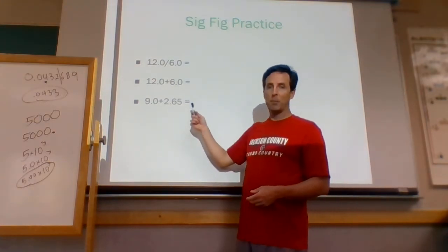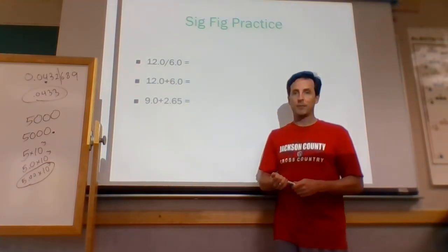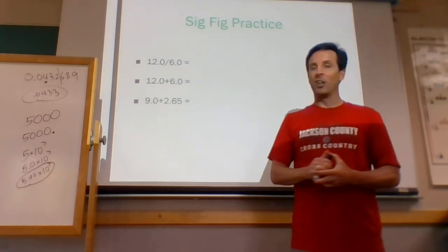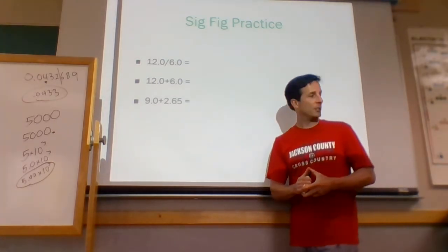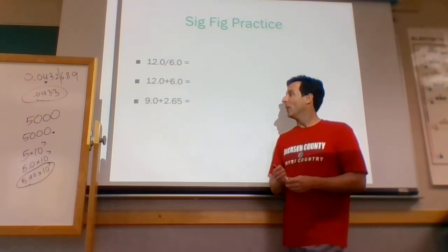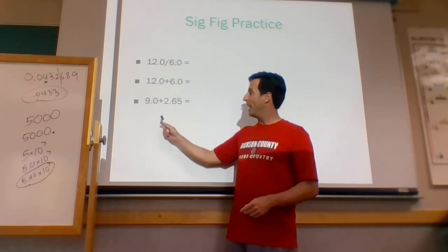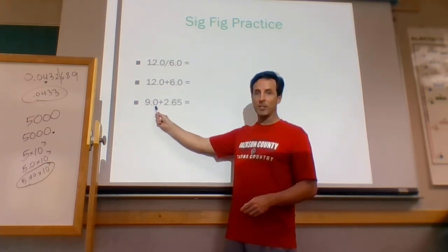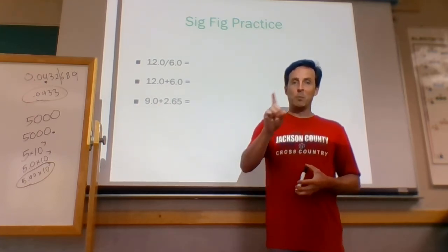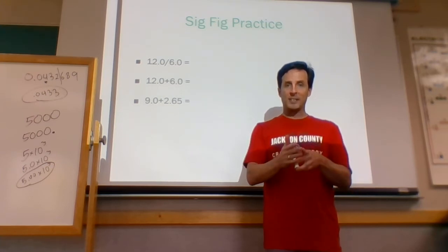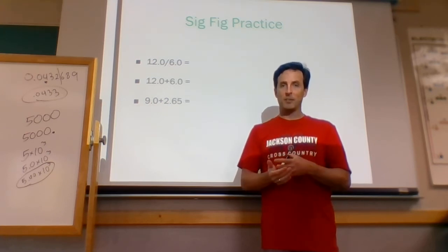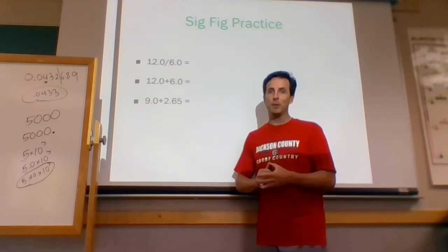What about 9.0 plus 2.65? Your calculator is going to say 11.65. But that's not the right answer. With adding, I go with the one that has fewer decimal places. The first number only had one decimal place, so if the calculator gives 11.65, I want to keep only one decimal place. It would be 11.6, but the 5 rounds it up to 11.7. The answer should be 11.7.